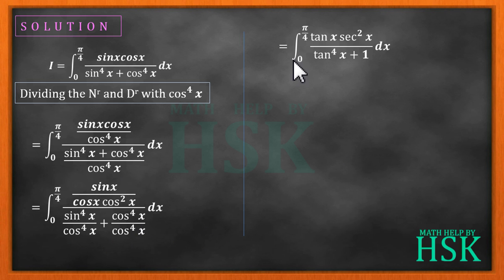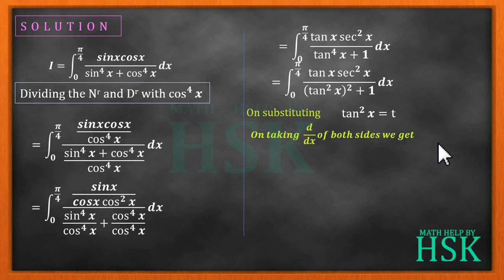This can be written as tan power 4x, this can be written as 1, so I'm going to get the value of I equal to this much. Further, I can write this tan power 4x as tan square x whole square like this. Now I'm going to perform the substitution.